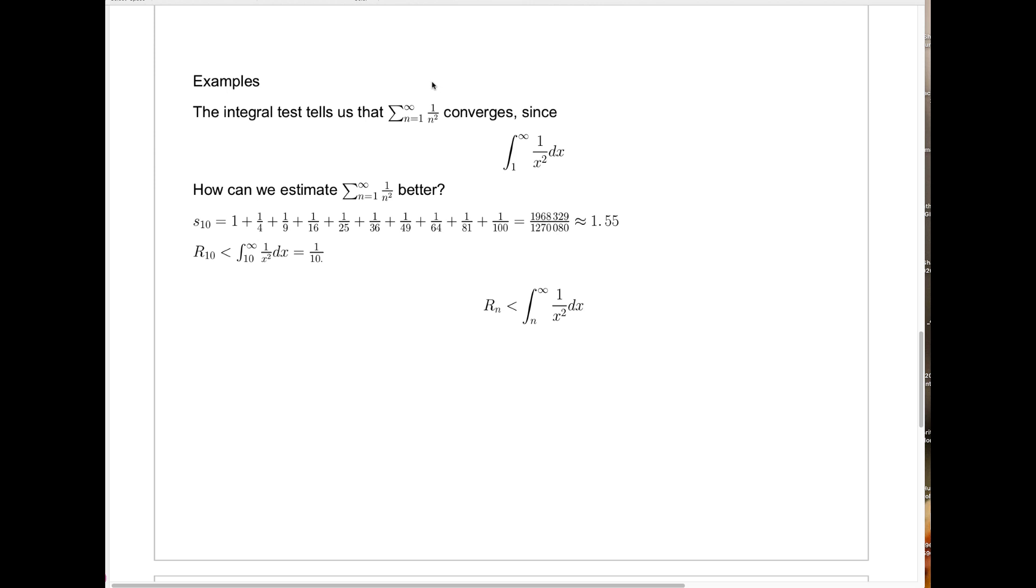This is what's referred to as a p-series, in this case with p equals 2. In one of the earlier video lectures, you saw that the integral test can tell us that any p-series, the sum from n equals 1 to infinity of 1 over n to the p-th power, will converge if p is strictly greater than 1.